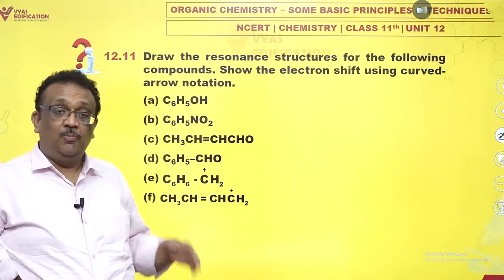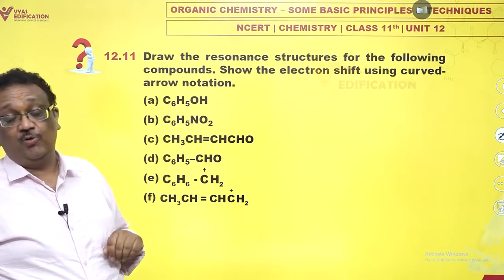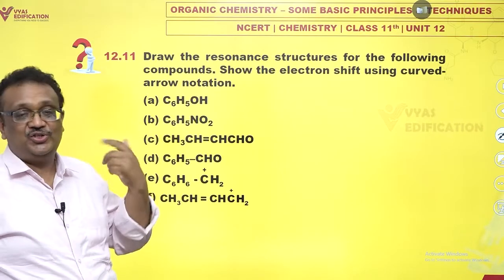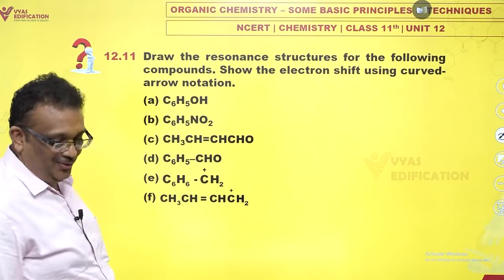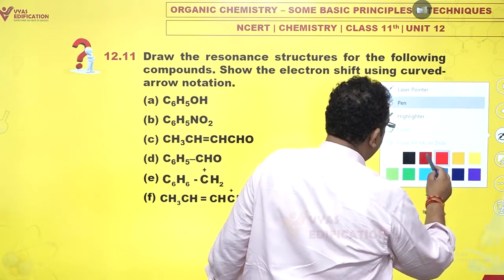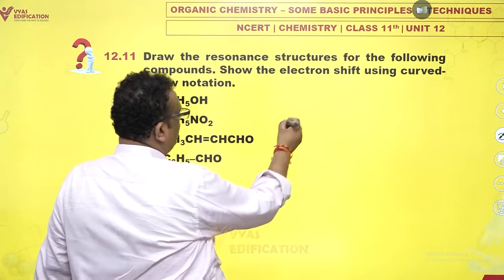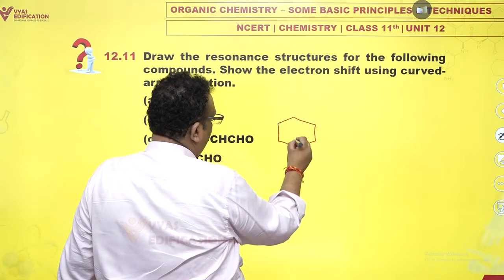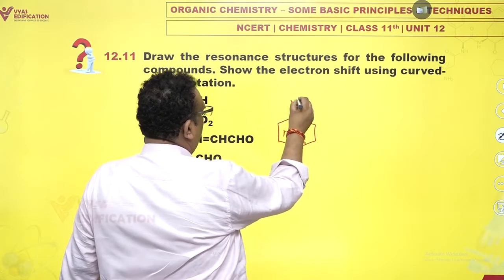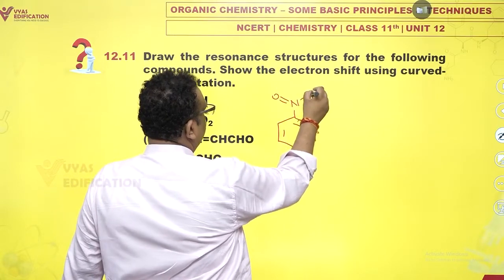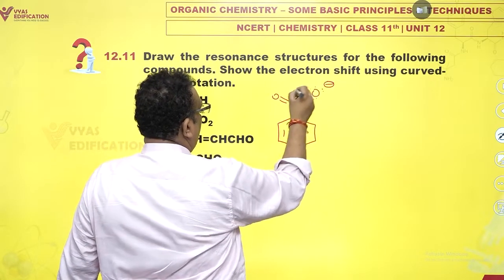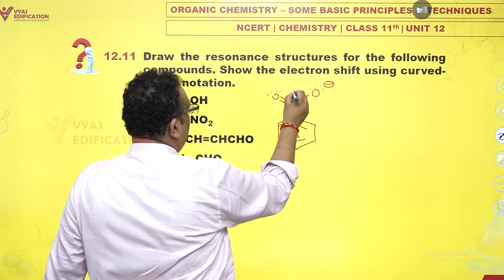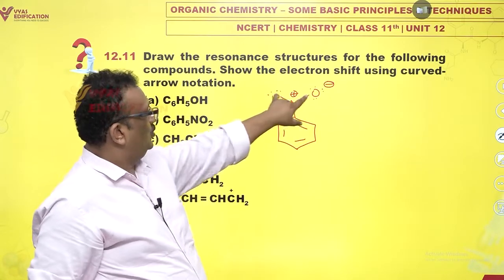Now B is a group which is an electron withdrawing group, NO2 group, and let us see how B fares. We have benzene ring being attached to NO2. My dears, first of all, please learn this is the structure of NO2 group. This NO2 group you can attach anywhere you like.